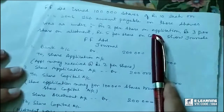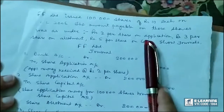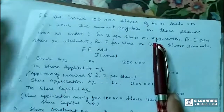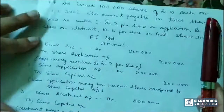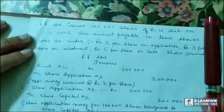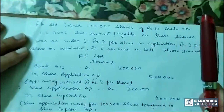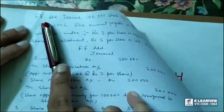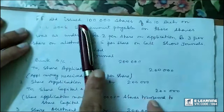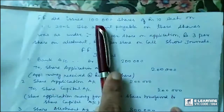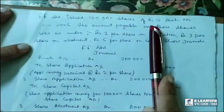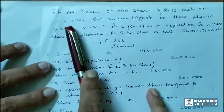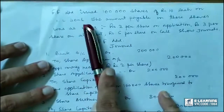Now, problem on Issue of Share — this is our topic today. I am going to show you an illustrative example on Issue of Shares, how it is done. So let's say this is the name of the company: FF Ltd issued 1 lakh shares of rupees 10 each on 1-4-2006.